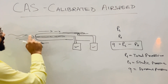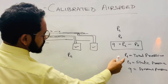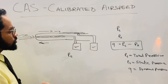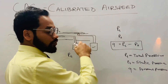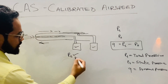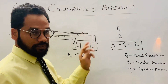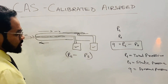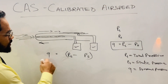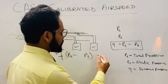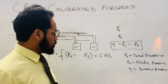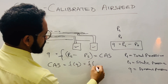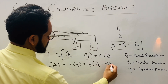The total pressure PT accounts for the pressure from the forward motion — the dynamic aspect — as well as the pressure sensed by the static probe — the static aspect. Static pressure PS is sensed separately by the static probe. So PT minus PS gives you the dynamic pressure Q, which is equivalent to — or a function of — the Calibrated Airspeed.